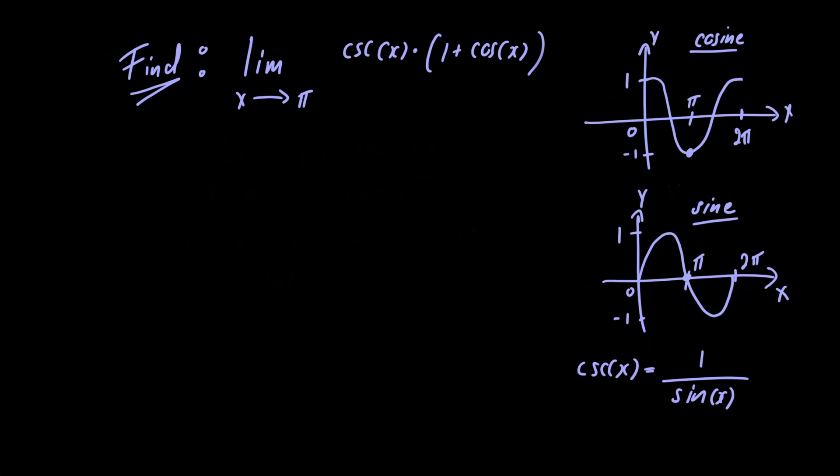In this video we're going to figure out what the limit is as x approaches π of cosecant of x multiplied by 1 plus cosine of x. Let's begin by rewriting this as the limit as x approaches π of 1 plus cosine of x divided by sine of x. All I've done is rewrite cosecant of x as 1 over sine of x.